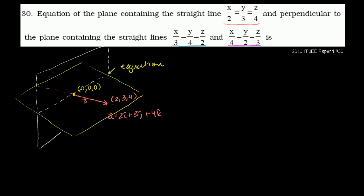The blue line contains the point (0,0,0) and the point (3,4,2) — by the same logic: if x=3, y=4, z=2, they all equal 1 and the equation holds. So let me draw that. And the magenta line also contains the origin and the point (4, 2, 3). I haven't even defined the coordinate axes — this is just for visualization purposes.